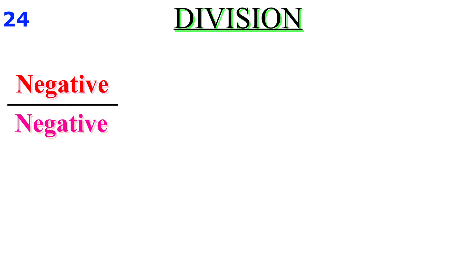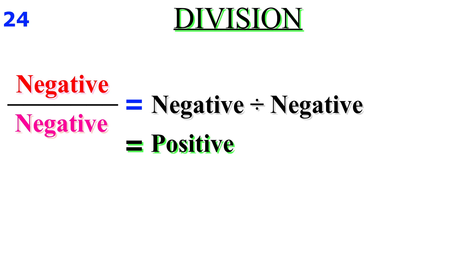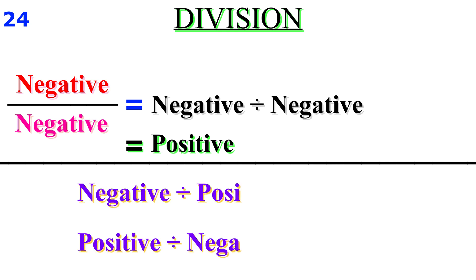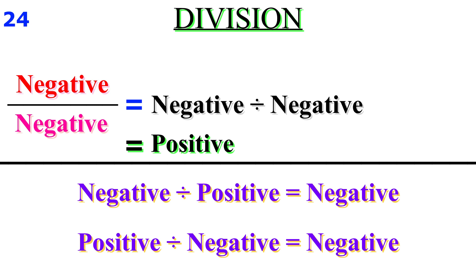The rule for dividing negative numbers is the same as for multiplying negative numbers. If both numbers are negative, you will get a positive answer. If either number is positive and the other is negative, you will get a negative answer.